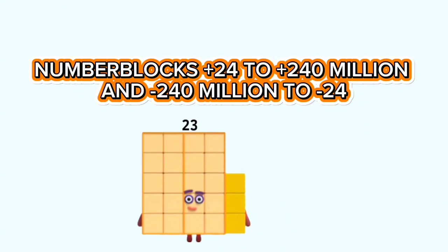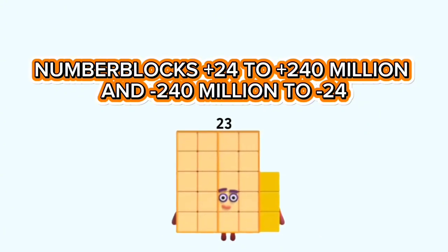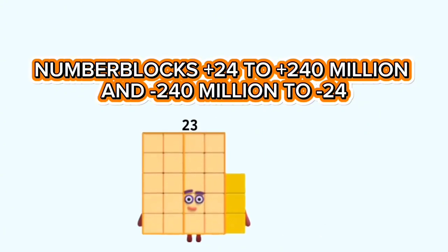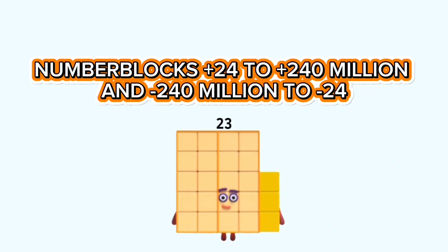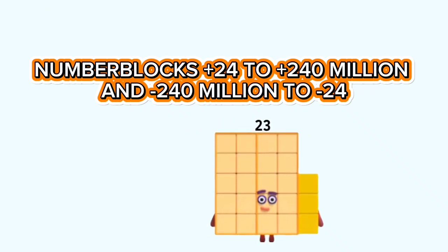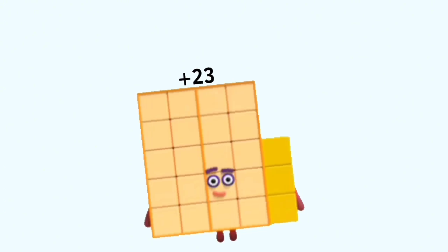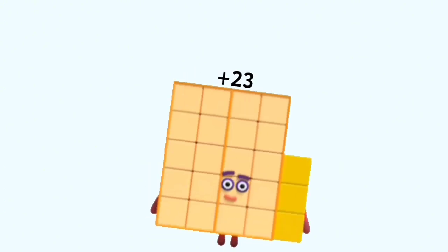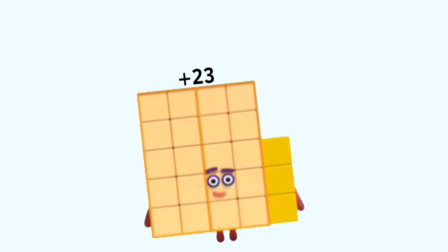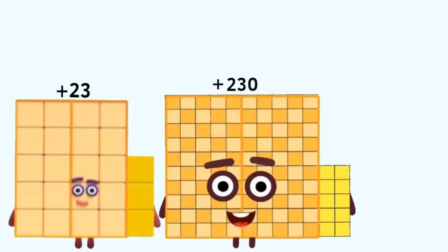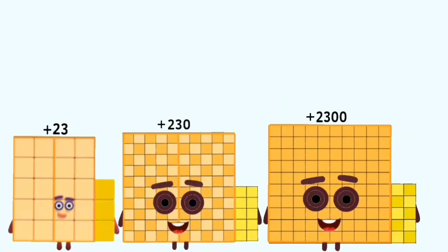Number blocks positive twenty-four to positive two hundred forty million, and negative two hundred forty million to negative twenty-four. Positive twenty-three. Achoo! Positive two hundred thirty. Achoo! Positive two thousand three hundred.